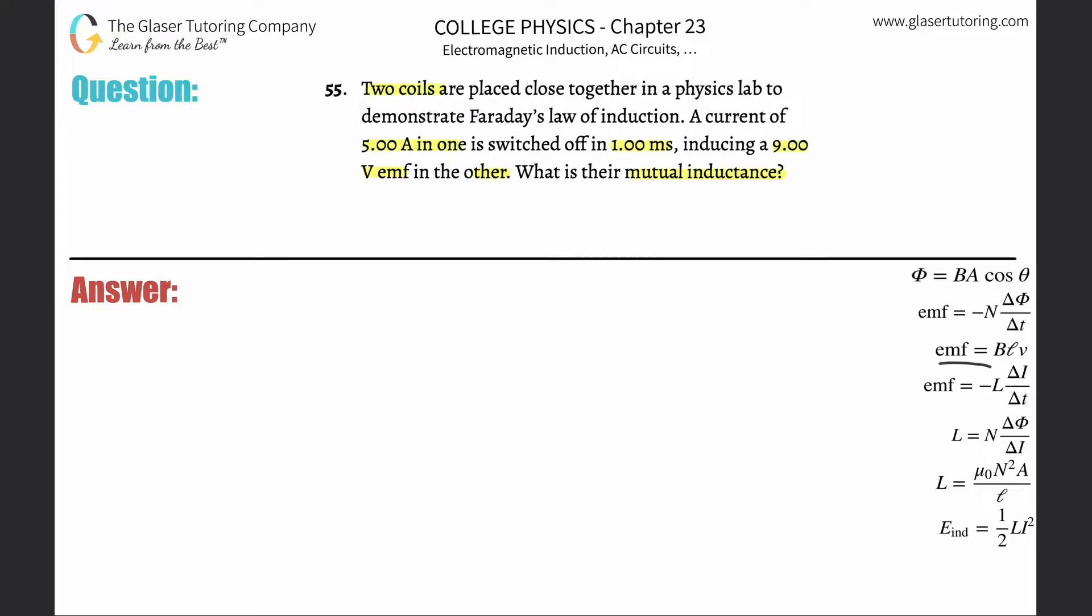This is going to be a variation of the self-inductance formula. I didn't write it in because I'm trying to save space. Here is the regular inductance formula: an EMF that is induced by the change in current within a circuit is equal to negative inductance, the inductance of that particular system, multiplied by the change in the current per the change in time.